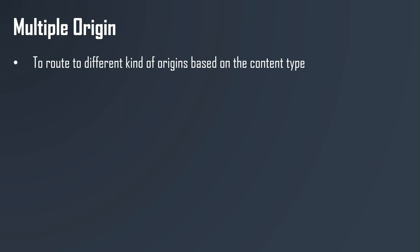First, let's talk about multiple origins in CloudFront, and then origin groups. You may want to redirect and route to different kinds of origins based on the content type or the path being passed to CloudFront. For example, you have a path for images, a path for the API, and a path for everything else. In CloudFront, you can set different cache behaviors with a path being determined.